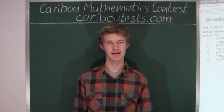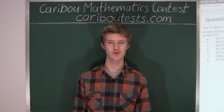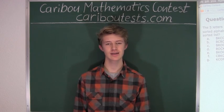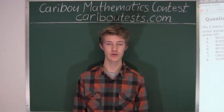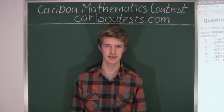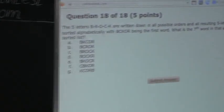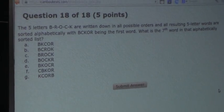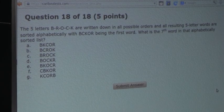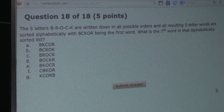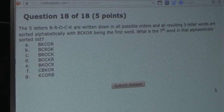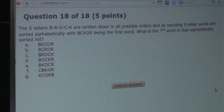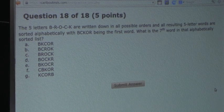Hi, this video is about the Caribou Mathematics Contest. I'm going to show the solution for the November 2014 Grade 5-6 Contest Question 18, which also came up in the Grade 7-8 Contest. So the question is, the five letters B-R-O-C-K are written down in all possible orders and all resulting five letter words are sorted alphabetically with B-C-K-O-R being the first word. What is the seventh word in that alphabetically sorted list?